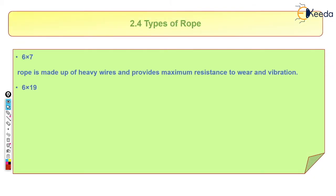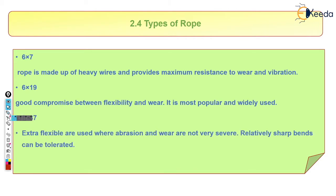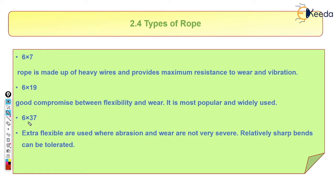In our syllabus there are three types of ropes: number one is 6×7, number two is 6×19, and number three is 6×37. The first digit shows the number of strands and the second digit shows the number of wires in each strand. So 6×7 has six strands with seven wires each; 6×19 has six strands with nineteen wires each; and 6×37 has six strands with thirty-seven wires each.